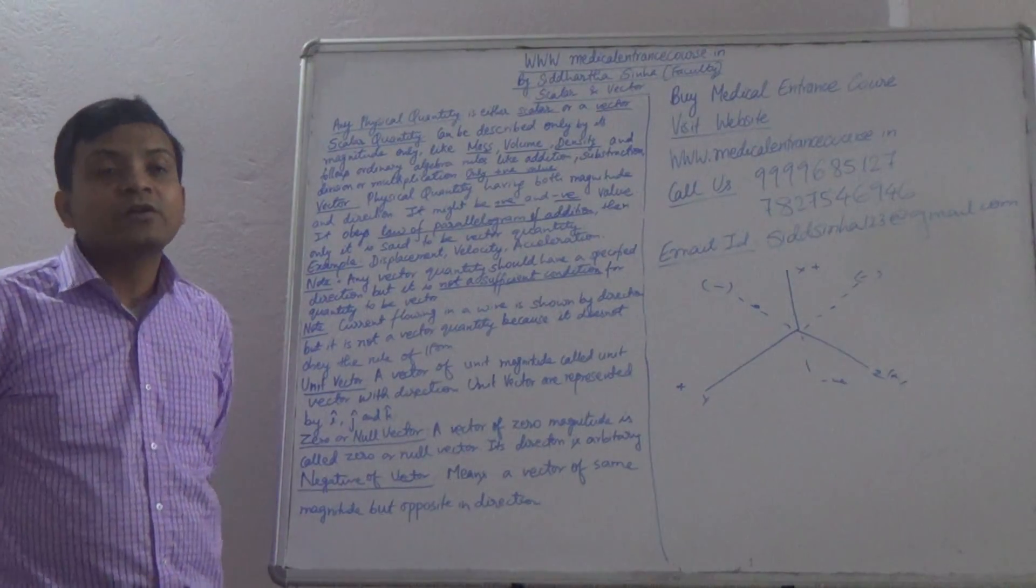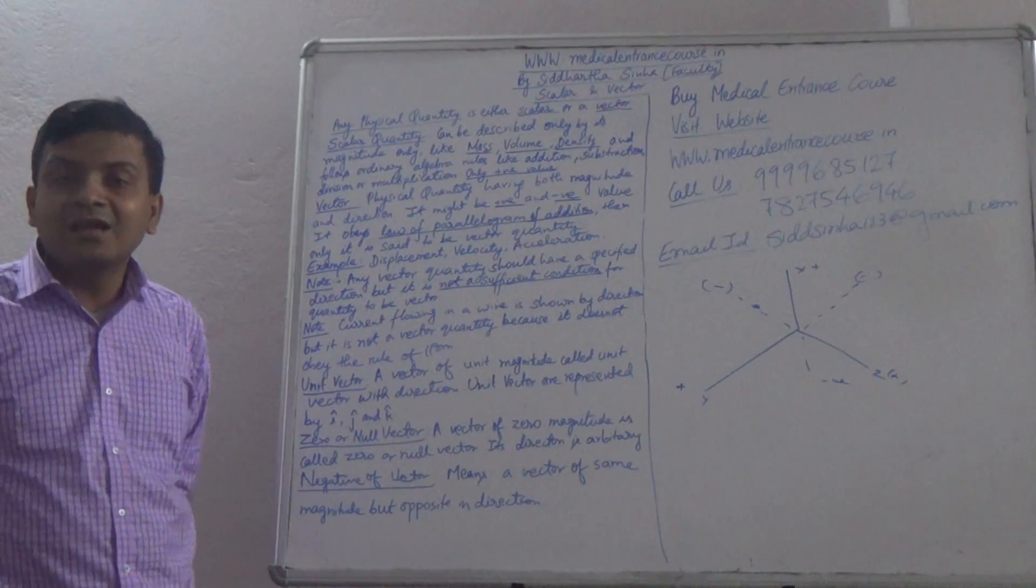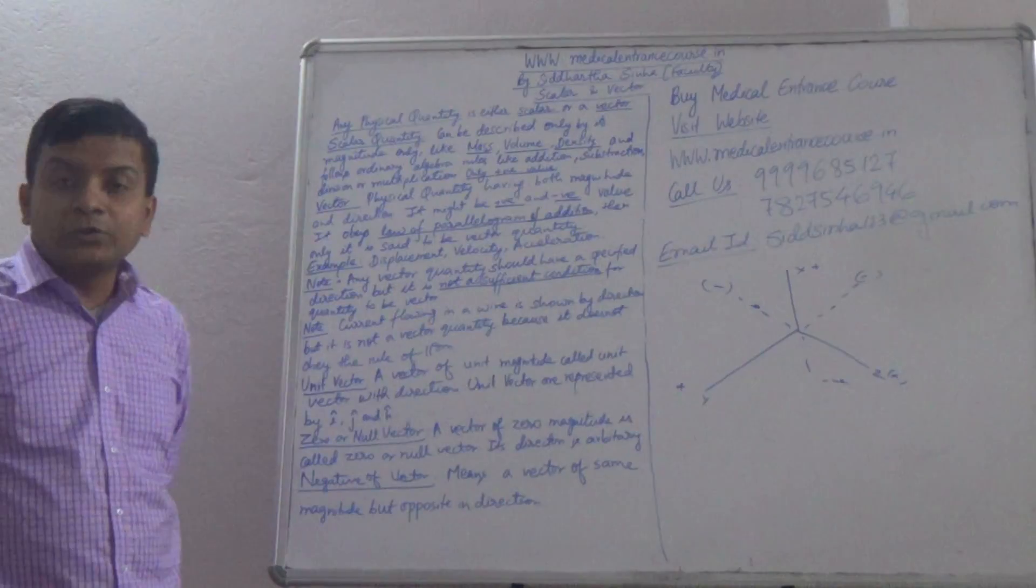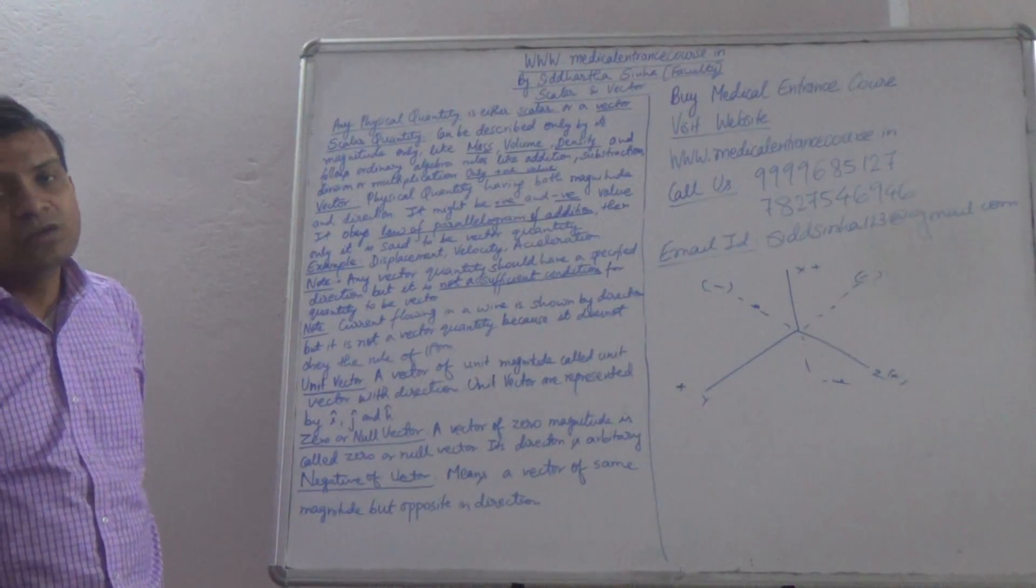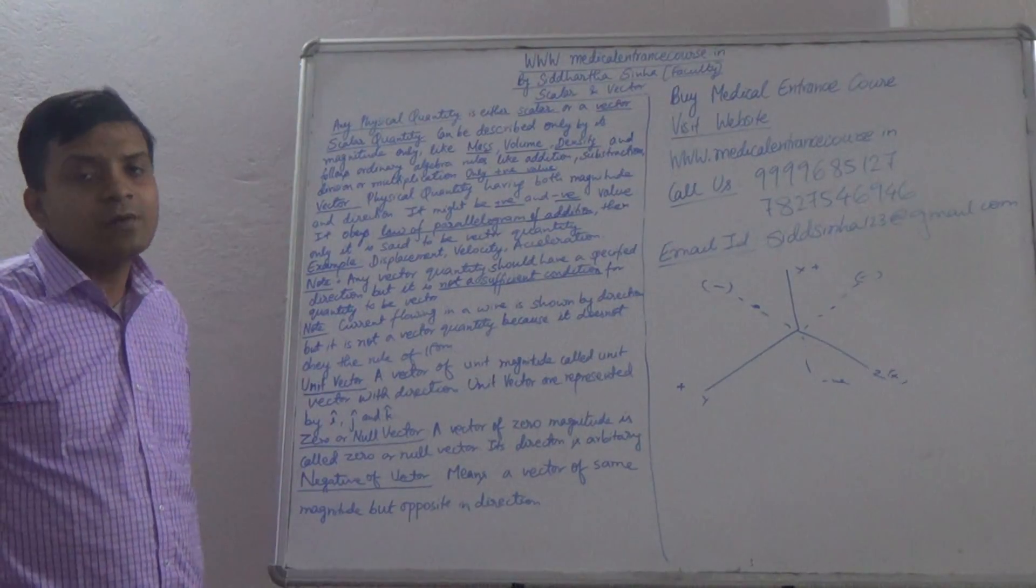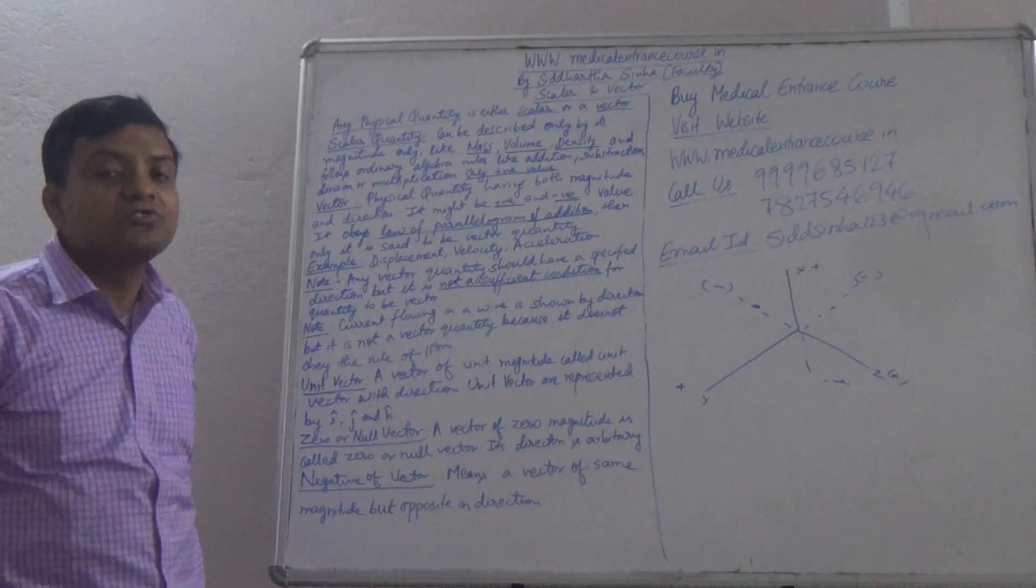Come to the unit vector. What is unit vector? Unit means number one or one value, only single one value. A vector of unit magnitude which has direction is known as unit vector. Unit vector is represented by i bar, j bar, and k bar. That is in x dimension, y dimension, and z dimension, that is 3D.